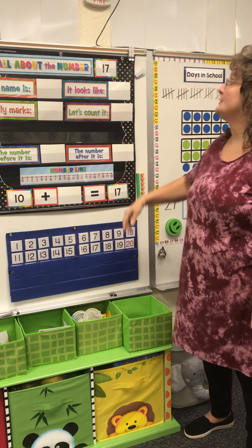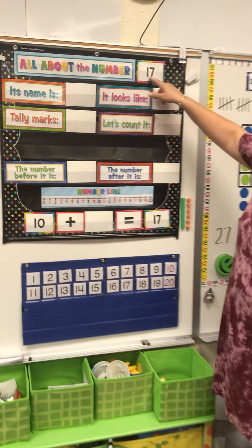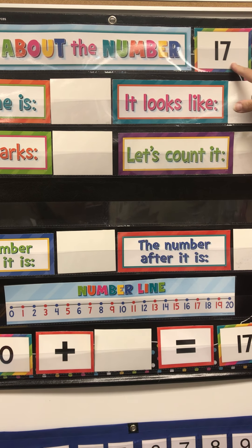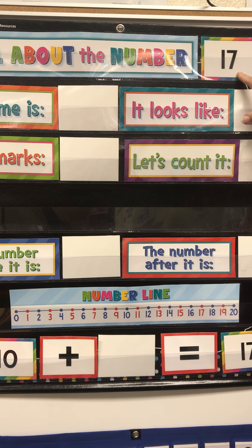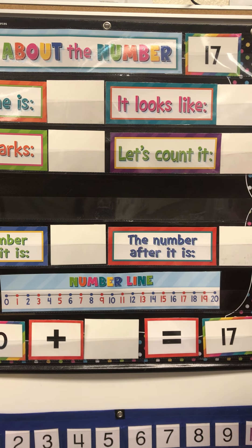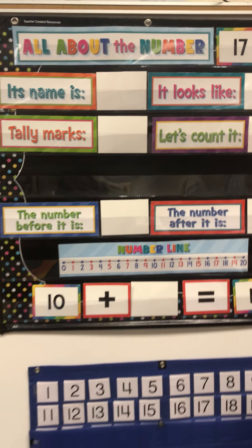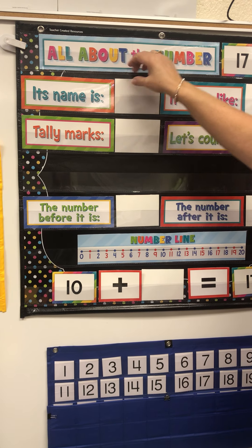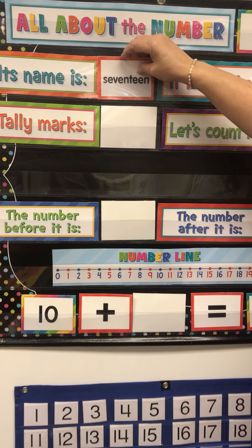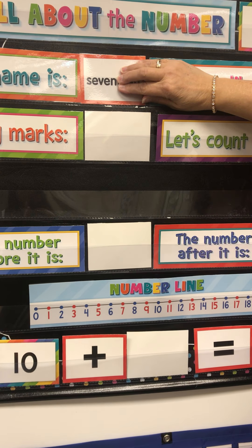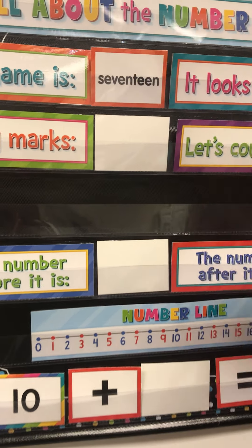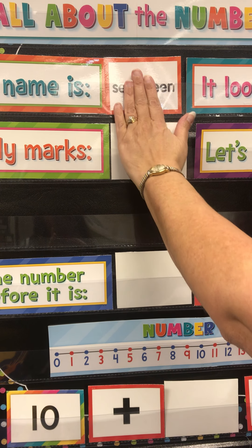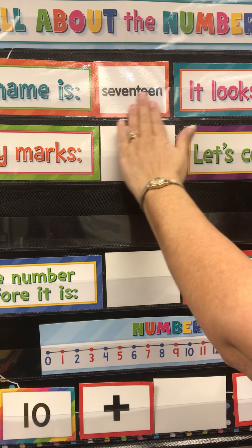Our new teen number today is 17. First you make a number one, then a seven after that. That's a number 17. Wait till you hear the song. Its name is 17. Look, there's the word seven. And when I cover up seven, there's teen. 17.